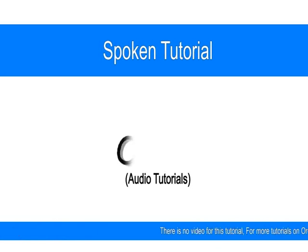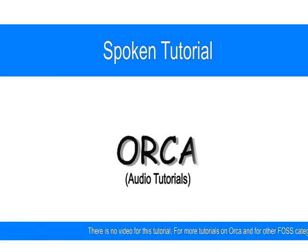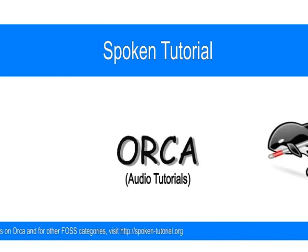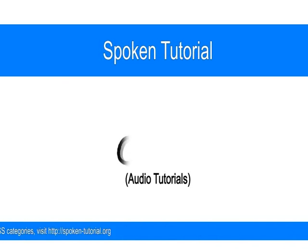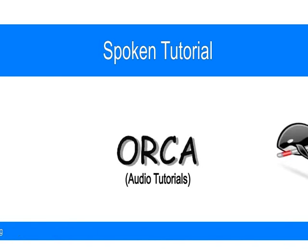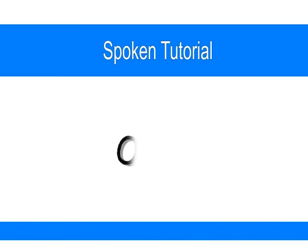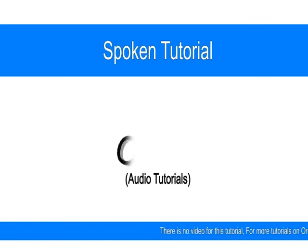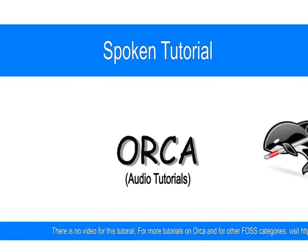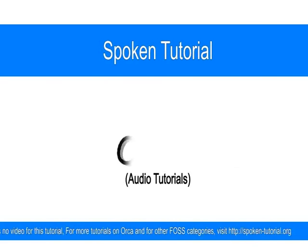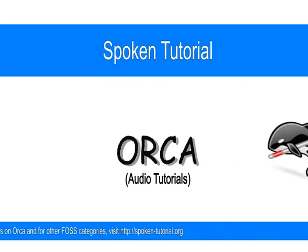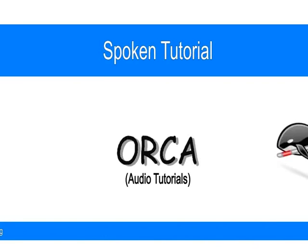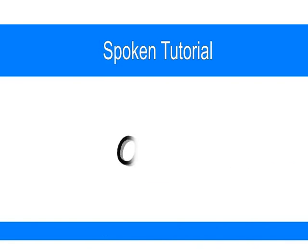Orca announces: Orca screen reader slash magnifier. Unsaved document 1. Edit frame. Page text. So Orca gives us a lot of information — it says that the gedit text editor is open with an unsaved document named Unsaved Document 1. You can type in this text editor and save the file, but that will be for a later tutorial.